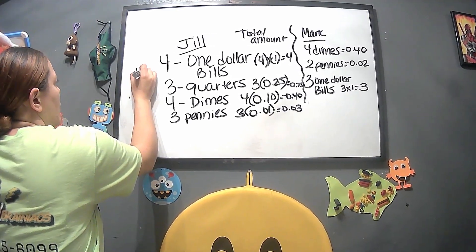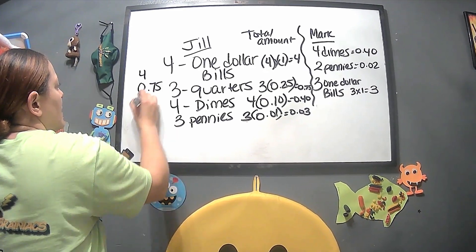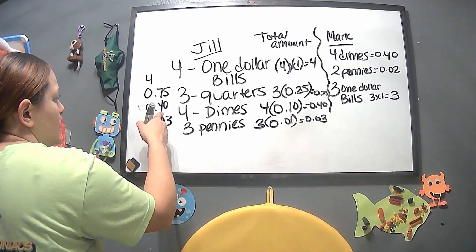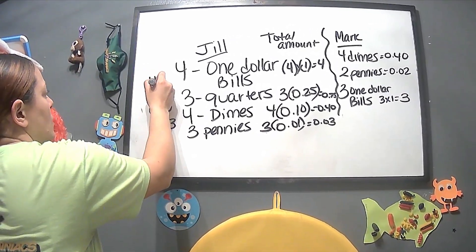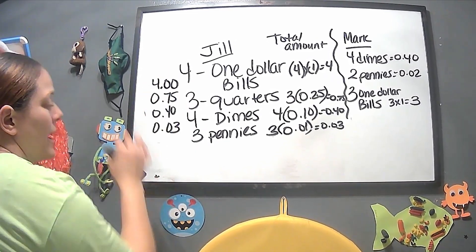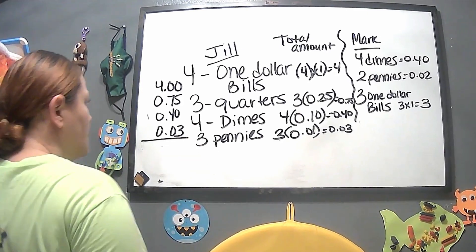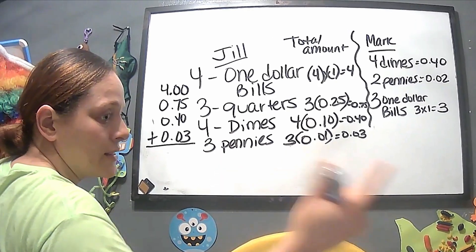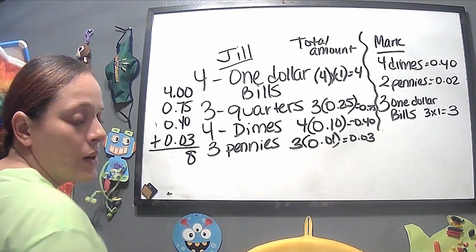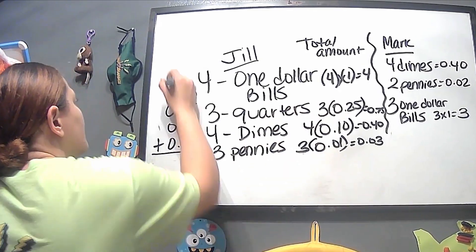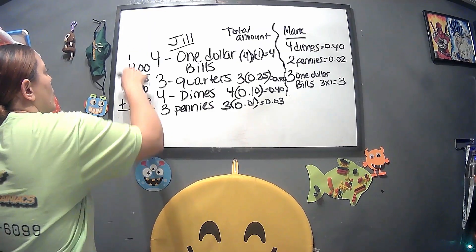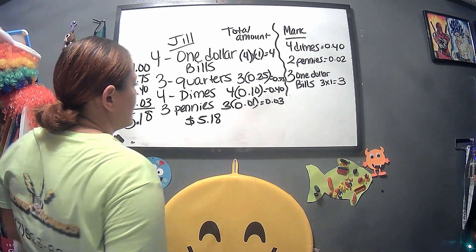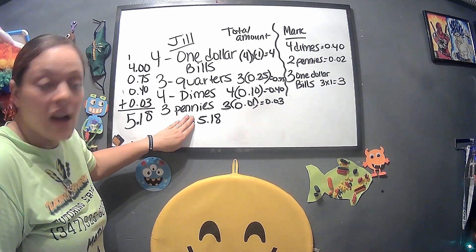We have 4 (dollars), 0.75, 0.40, and 0.03 — that's 75 cents, 40 cents, and 3 cents, with 4 as the whole number. Keep everything in alignment and in the same order. Five plus three is eight, seven plus four is eleven (carry the one), four plus one is five. So Jill has five dollars and eighteen cents — or 5.18.